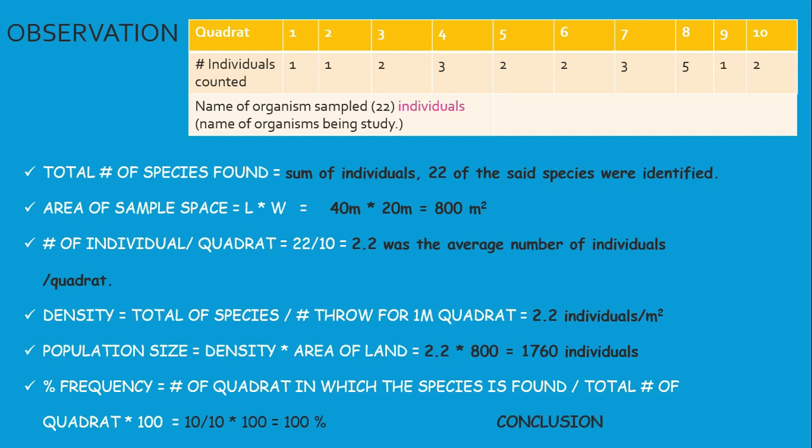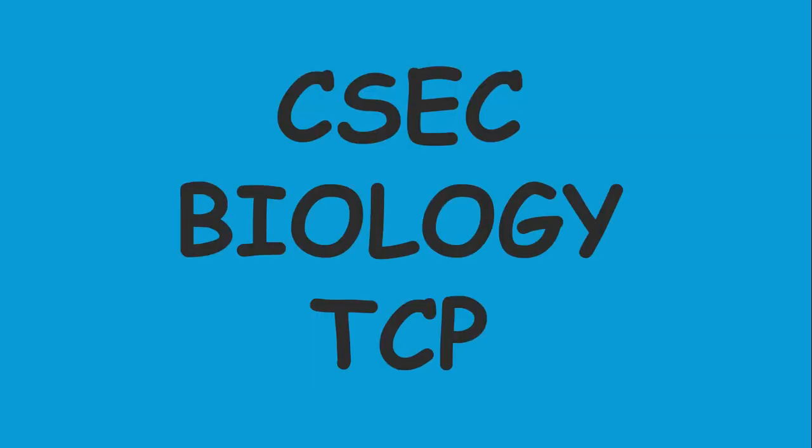Our conclusion based on the aim: density of 2.2 individuals per meter square, 1,760 individuals for the area sampled, and a percentage frequency of 100%. Thanks much for watching.